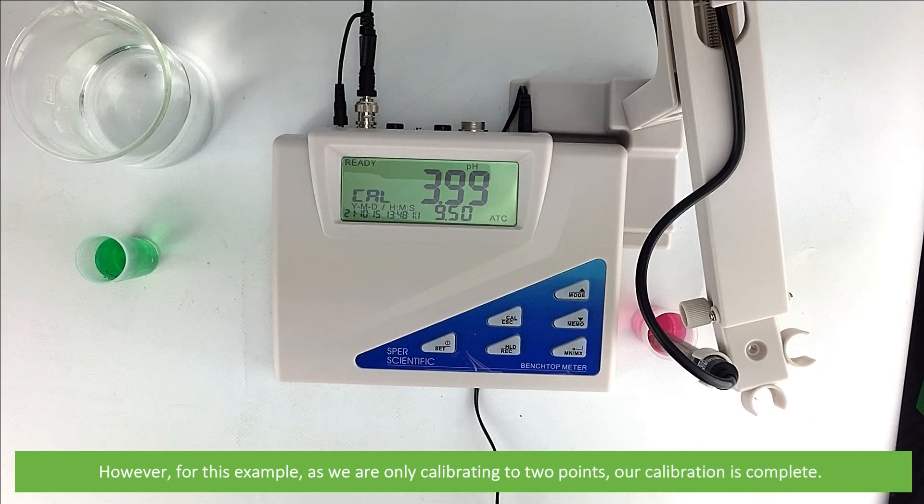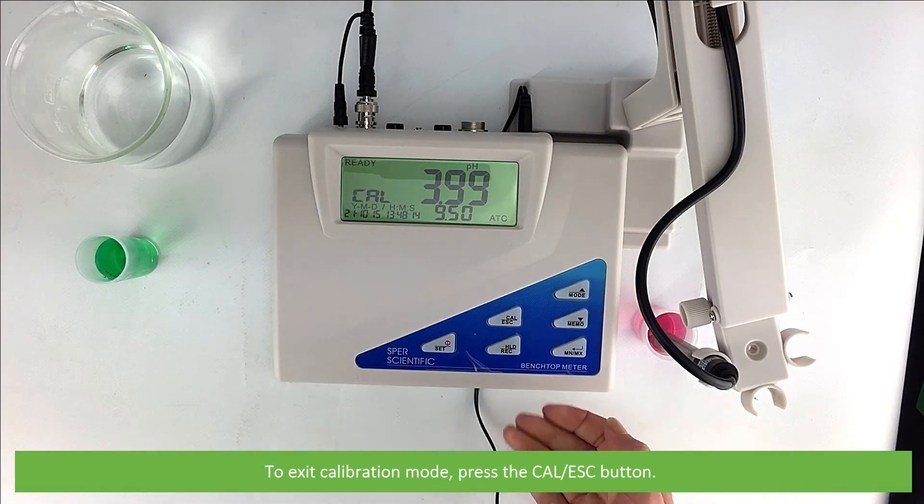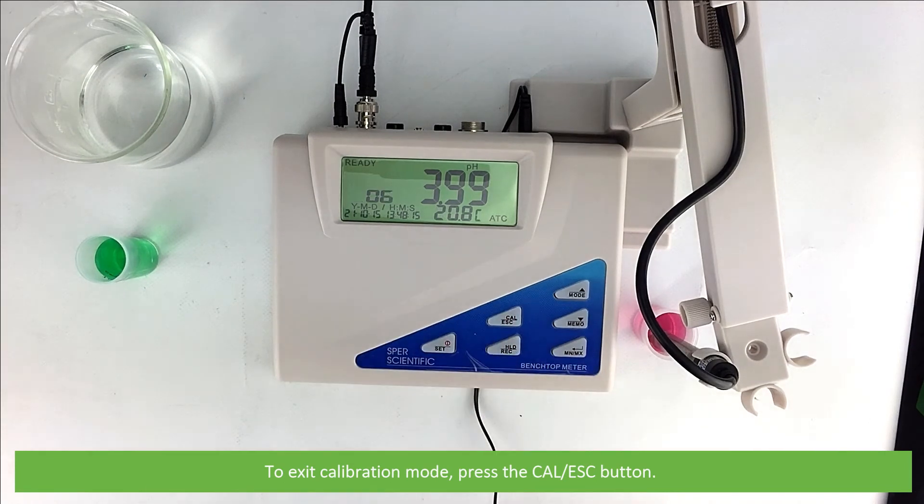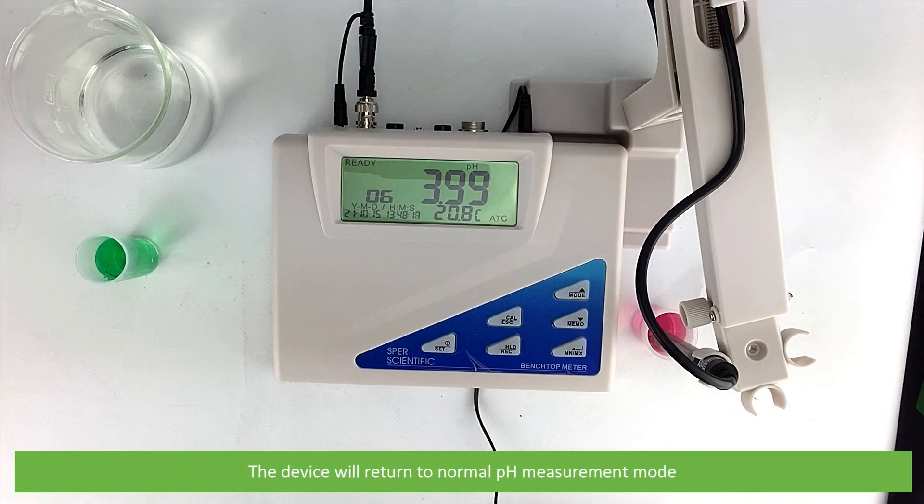However, for this example, as we are only calibrating to 2 points, our calibration is complete. To exit calibration mode, press the Cal Escape button. The device will return to normal pH measurement mode.